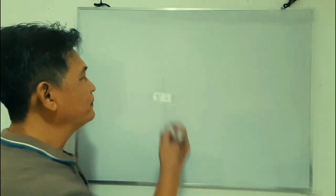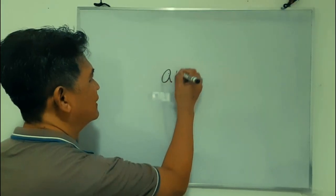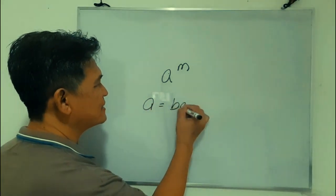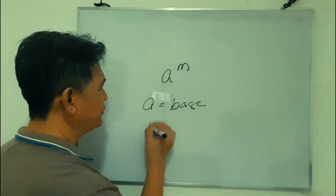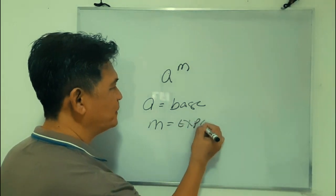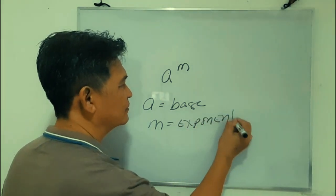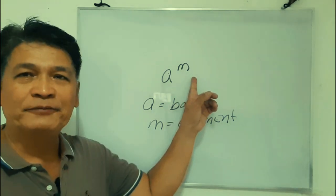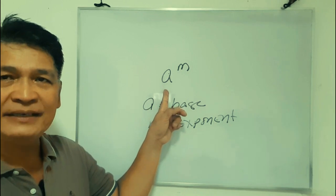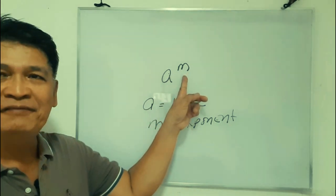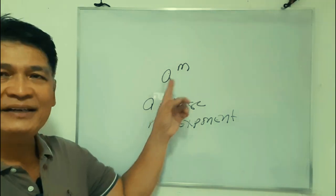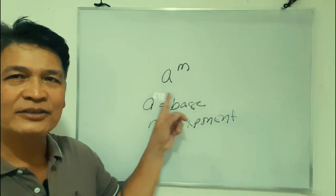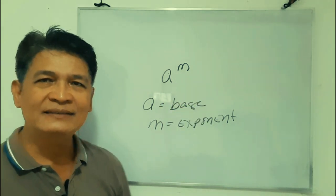In algebra, when you say a raised to m, your a here is your base and your m is your exponent. The exponent is the number of times wherein you are going to apply your base. For example, if your m is 2, a squared means you are going to multiply your a two times. So a squared is equal to a times a.